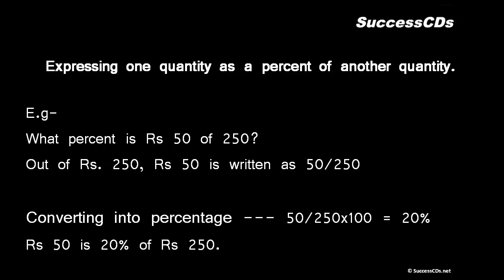Next we come forward to expressing one quantity as a percent of another quantity. Let's have a look: what percent is rupees 50 of rupees 250? First of all we have to see - out of rupees 250, rupees 50 can be written as 50 upon 250. Converting that into percentage I get 50 upon 250 into 100, that is 20 percent.